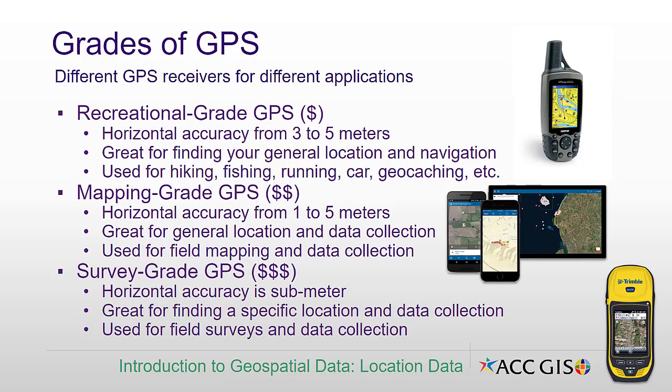What really drives the cost of the GPS is the accuracy of the position. If your application really doesn't require that accurate of a position — for example, hiking, fishing, or running — then you might utilize recreational grade GPS, which will give you a horizontal accuracy of three to five meters. It's good for finding your general location and using for navigation.